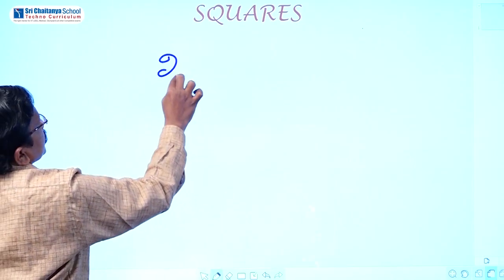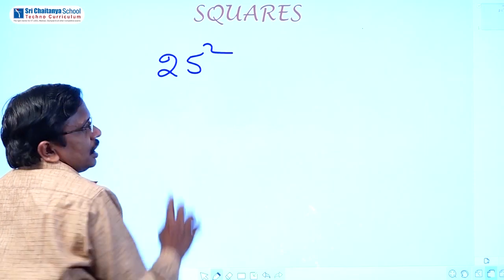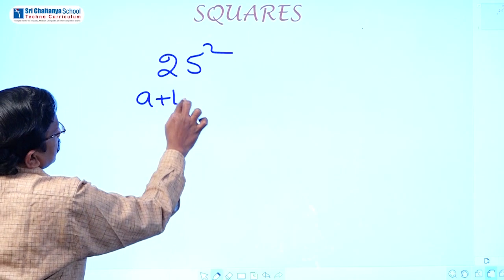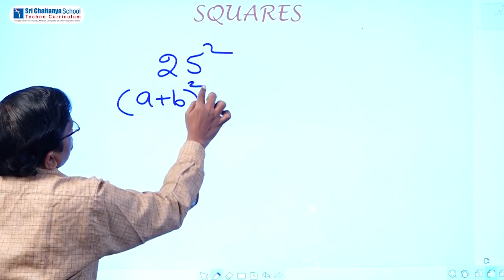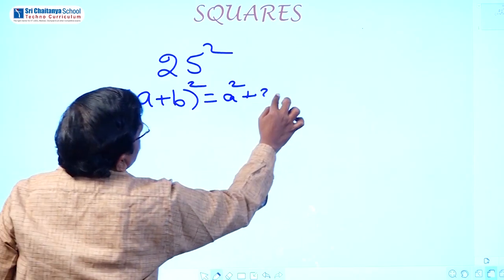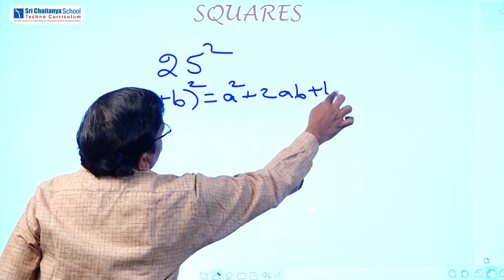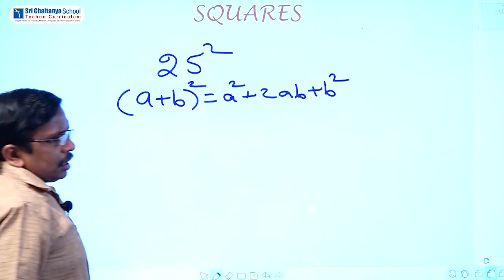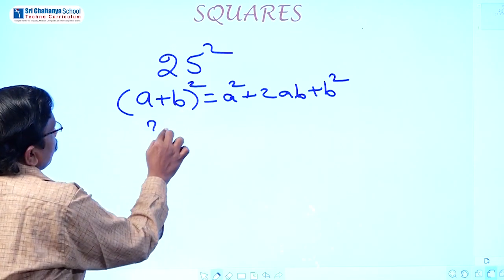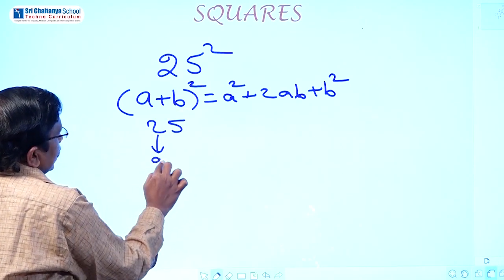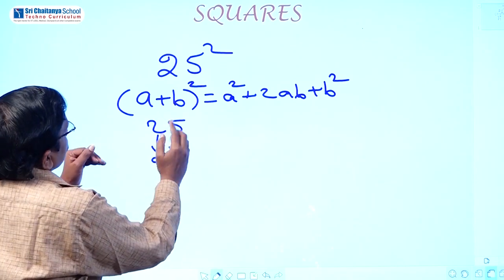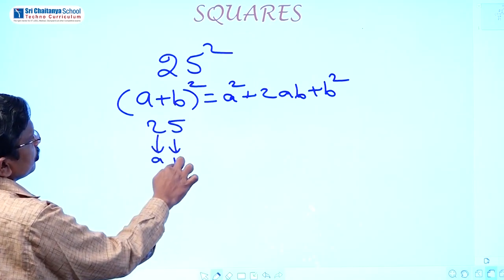I am taking the example of twenty-five squared. You can apply one formula here: A plus B whole square equals A square plus 2AB plus B square. So consider twenty-five as A equals two and B equals five.